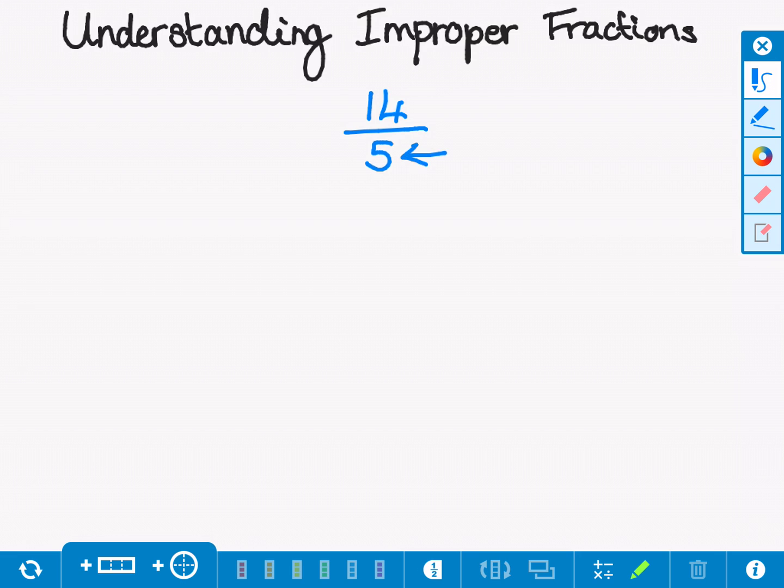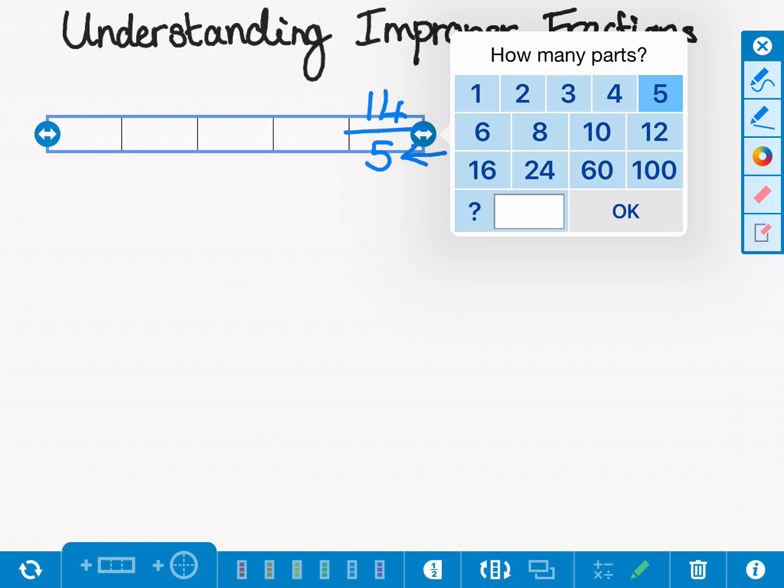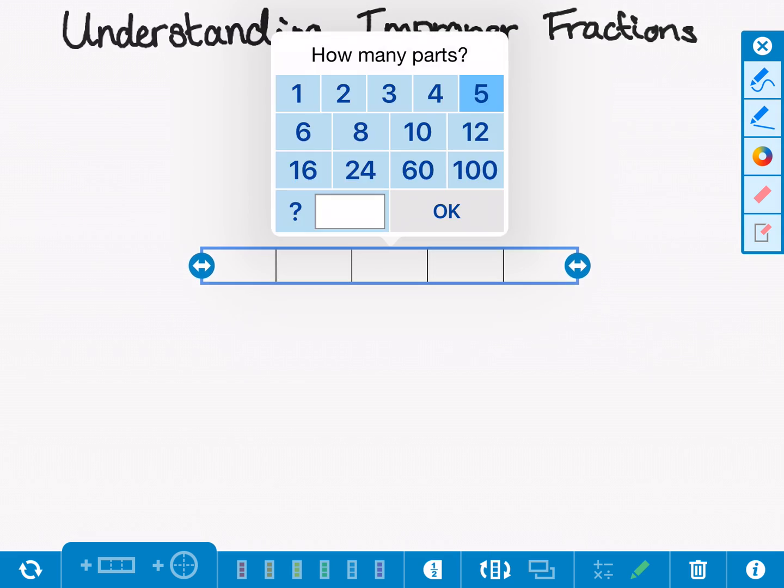and so I'm going to get a bar in 5 parts here. So I'm going to shade this in 1, 2, 3, 4, 5 and I'm just going to label that 5 fifths.